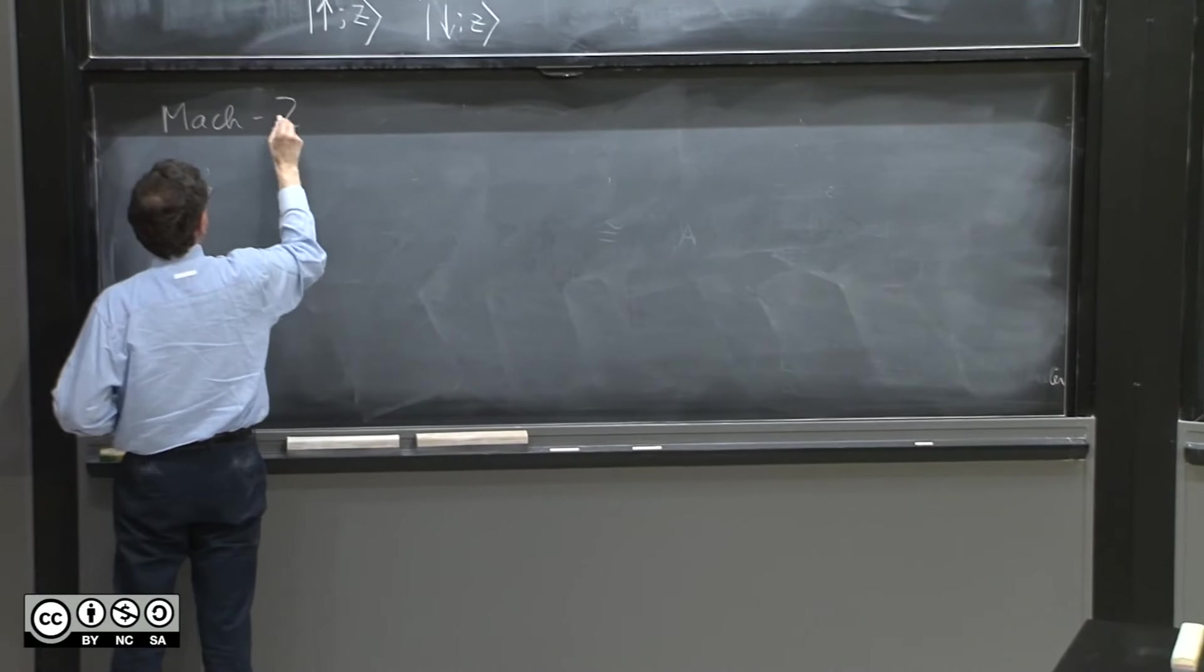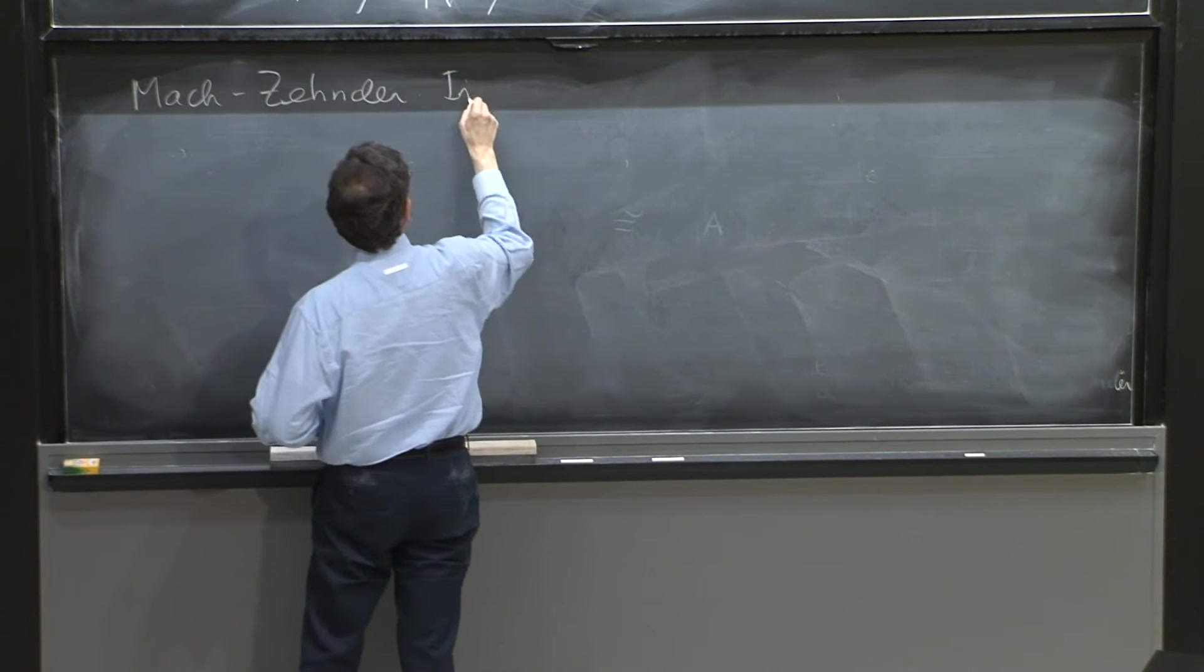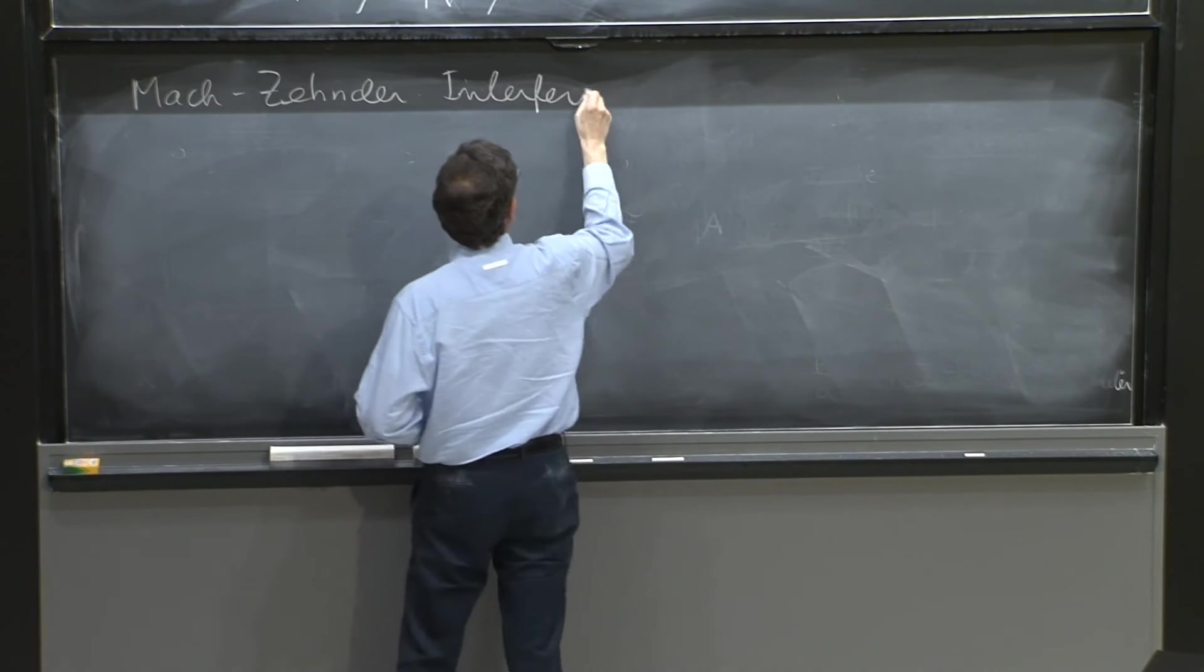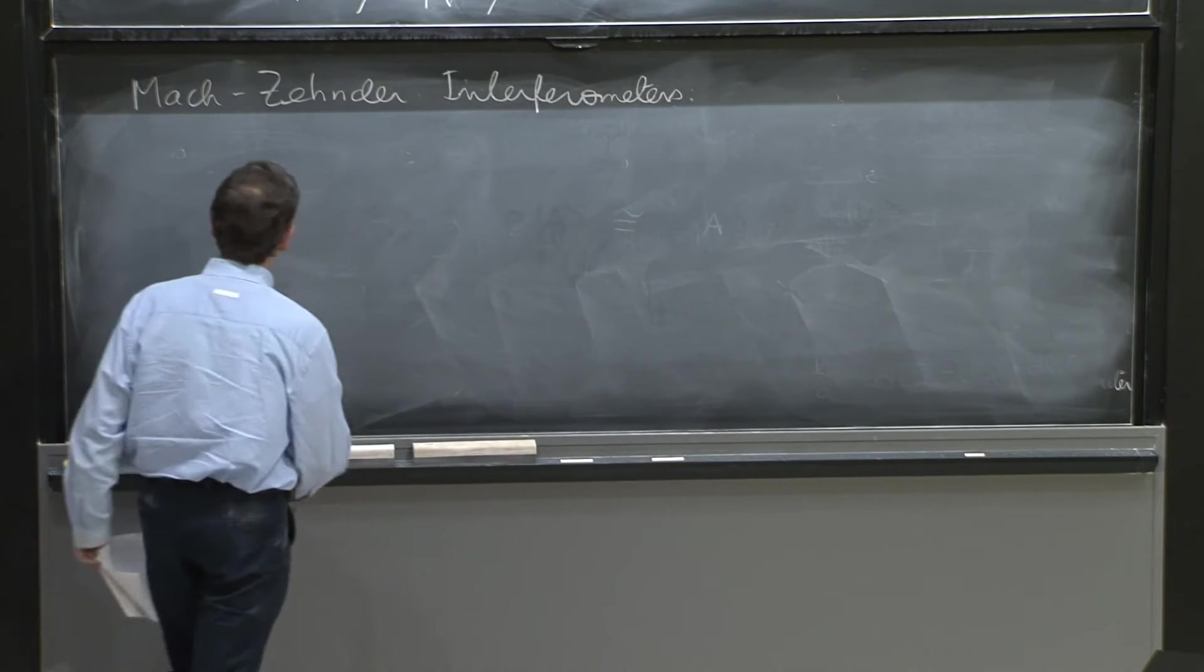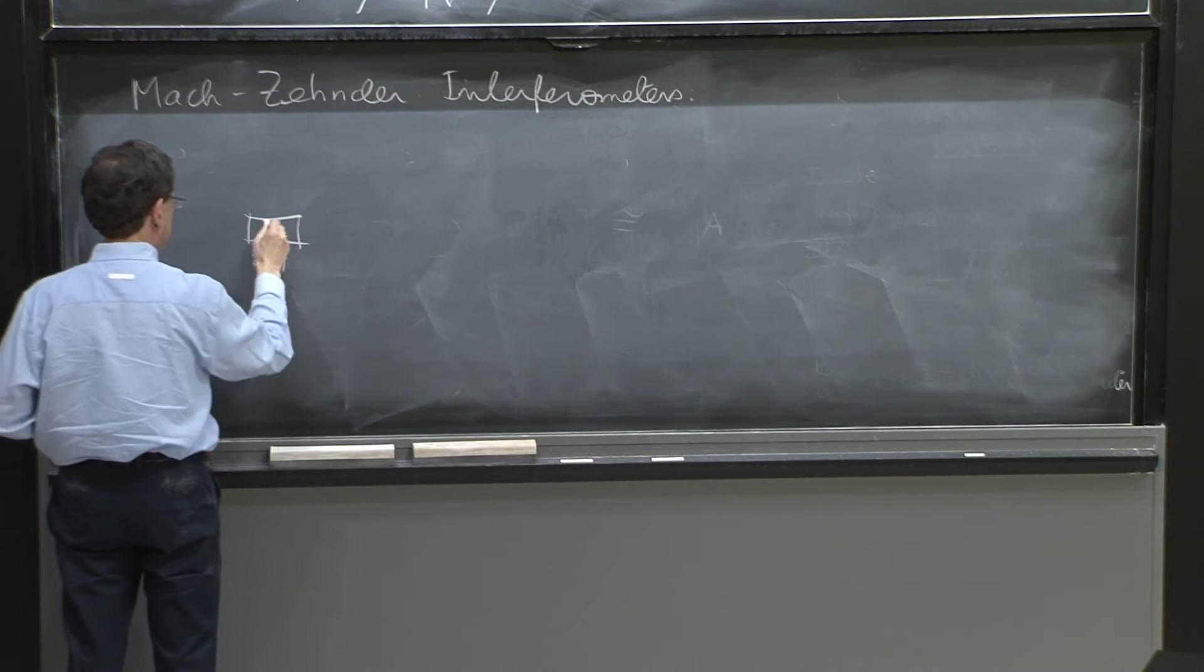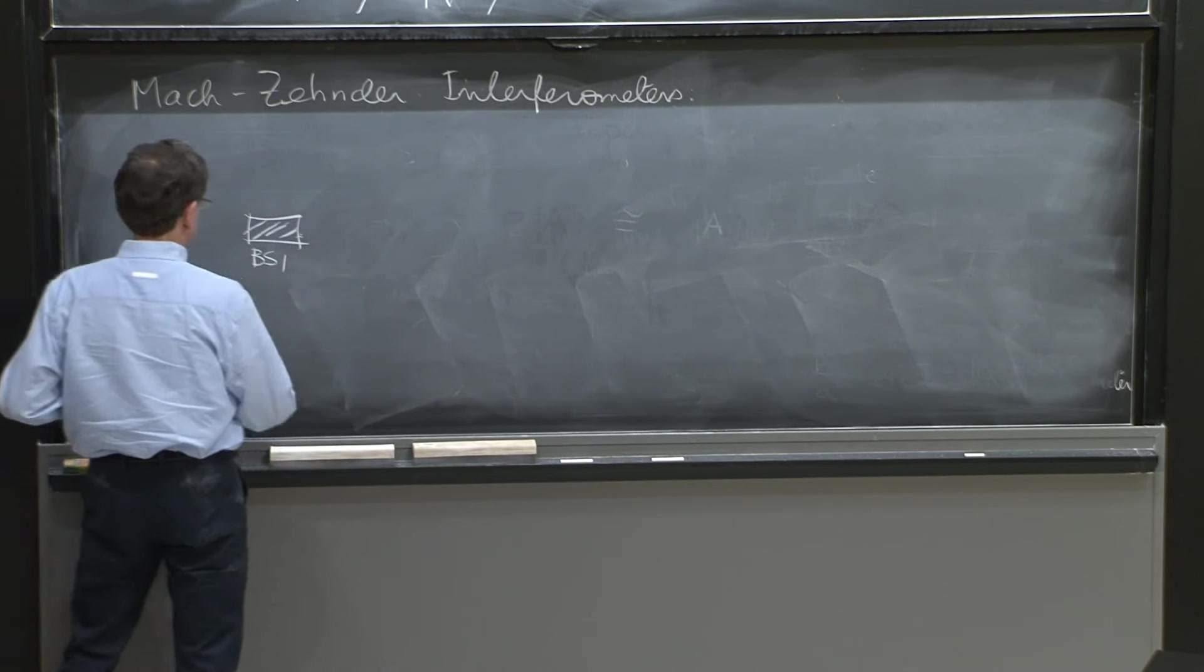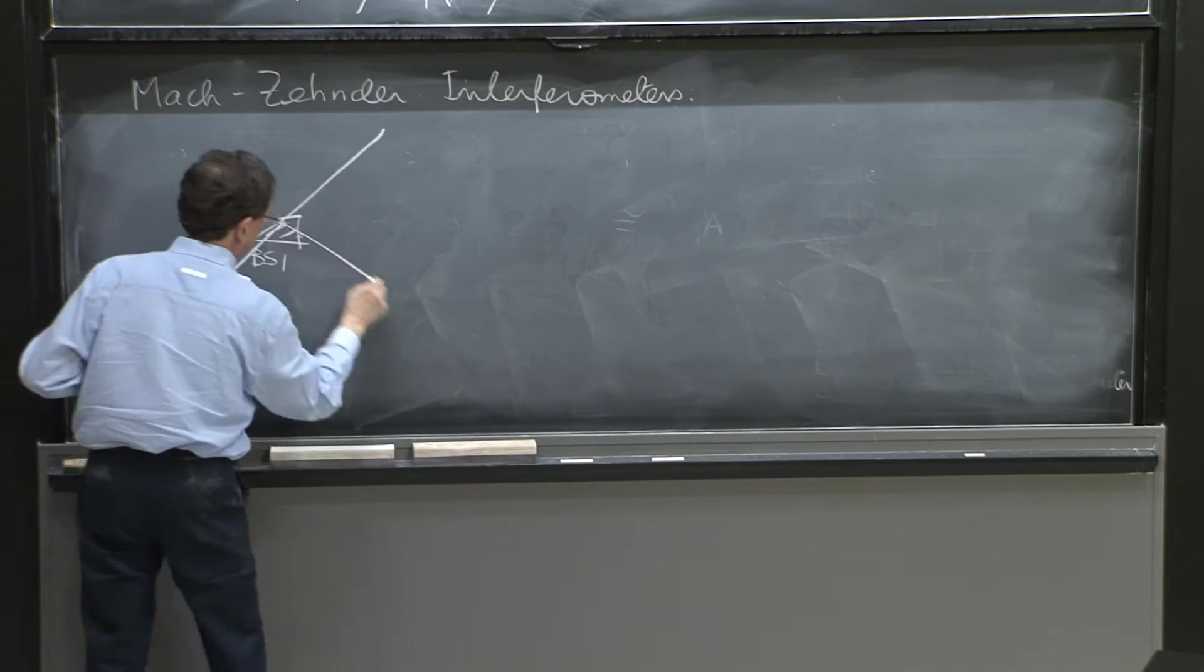Mach-Zehnder interferometers have a beam splitter, and the beam coming in splits into two. A mirror, another mirror. The beams are recombined into another beam splitter.